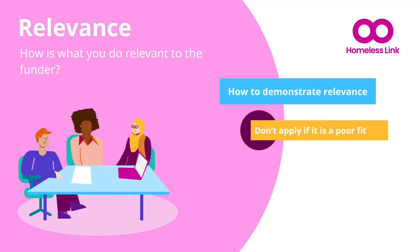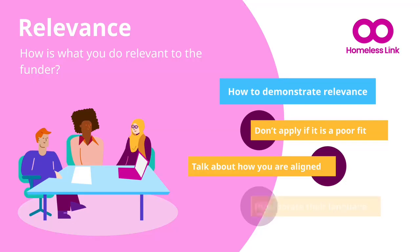But if you are aligned and you can see how their funding will help you deliver services, strategy and impact, then talk about that. Use your statements from your case for support and simply add that this supports their ambition too, and talk about your shared objectives. And finally, incorporate their language. This might sound counter to the guidance to use your organisation's voice, but if there are particular phrases they use, fit them into your responses. If incorporating their language means losing your voice or using language that goes against your approach and values, that's a good test to see if this really is a good fit for you.